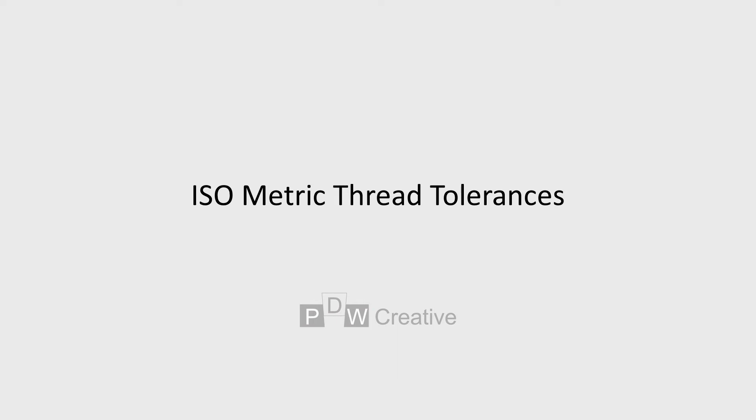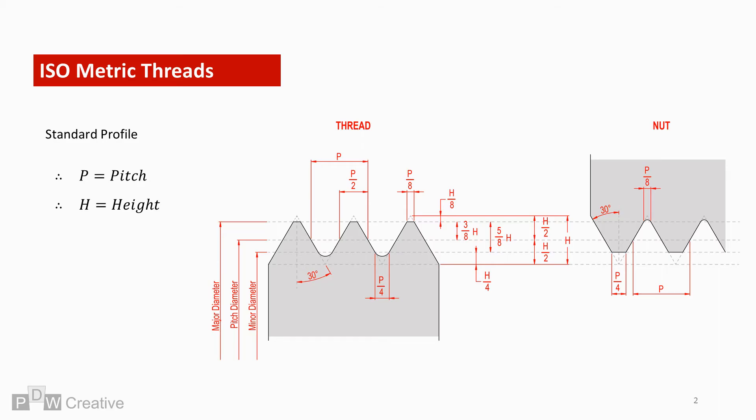The basic ISO metric thread profile is calculated based on the pitch P, height H, major, minor, and pitch diameters, but this profile is subject to tolerance like any manufactured item, and this video focuses on explaining how this works.